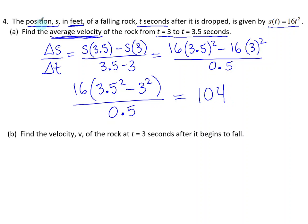Those computations lead me to 104. Now because this is a real life scenario, we need words in our answer. The change in position is a measure of feet, and the change in time is a measure of seconds. Therefore, we're dividing feet by seconds, so our answer is 104 feet per second. And there's our average velocity over that time interval.